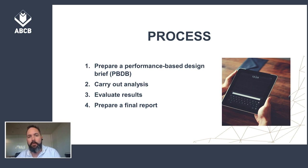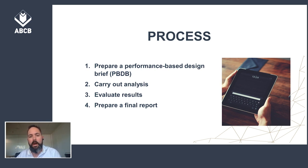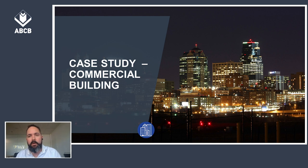The brief is to include a minimum of three sections: a scope of works for the performance based analysis, the technical basis for analysis, and the acceptable criteria of the relevant performance solution as agreed by the stakeholders. Once the brief has been prepared, you carry out analysis as documented in the brief, then evaluate the results against the acceptance criteria in the brief. Finally, you compile this into a report that includes at least all performance requirements and deemed-to-satisfy provisions identified in the brief, an identification of all assessment methods used, the details of steps one to three, confirmation that the performance requirements have been met, and details of any conditions or limitations regarding the performance solution.